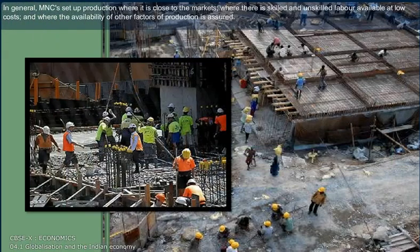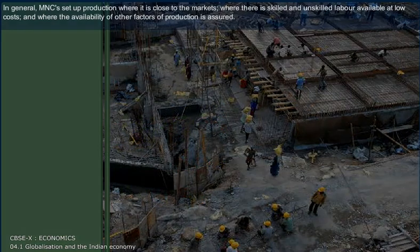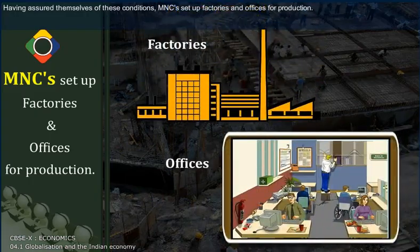In general, multinational companies set up production where it is close to the markets, where there is skilled and unskilled labor available at low costs, and where the availability of other factors of production is assured. Having assured themselves of these conditions, multinational companies set up factories and offices for production.